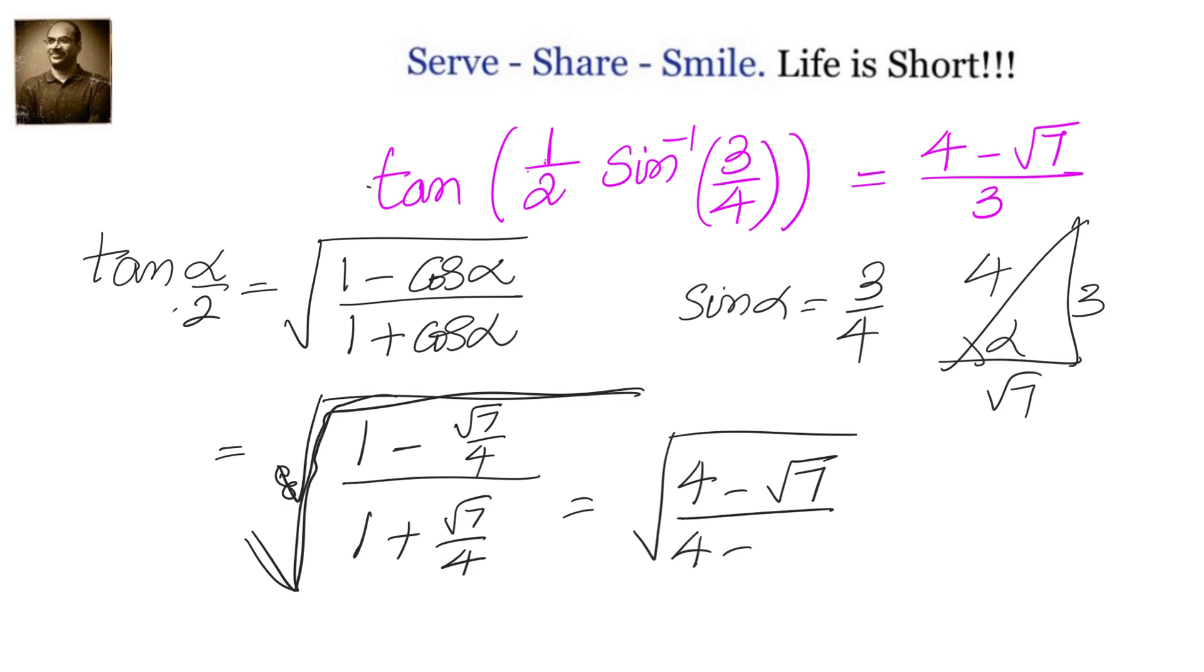The right-hand side has four minus root seven in the numerator without an outer root. We need to multiply by four minus root seven in both numerator and denominator inside the root.